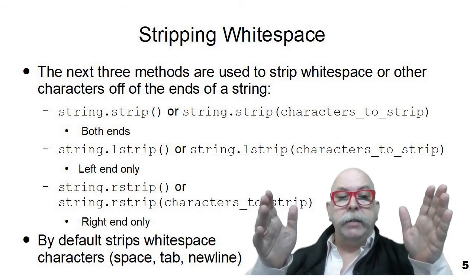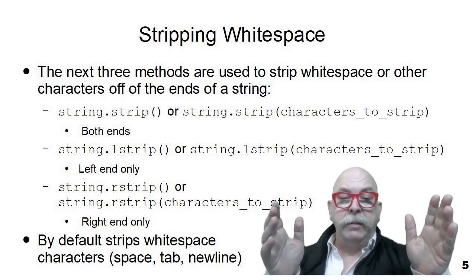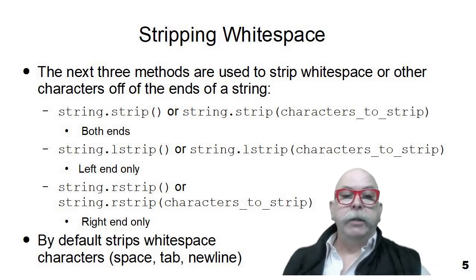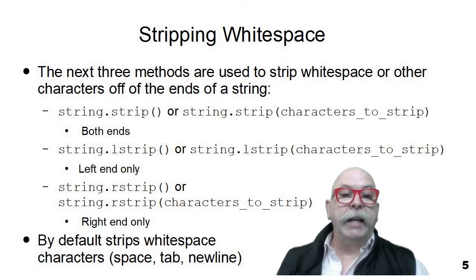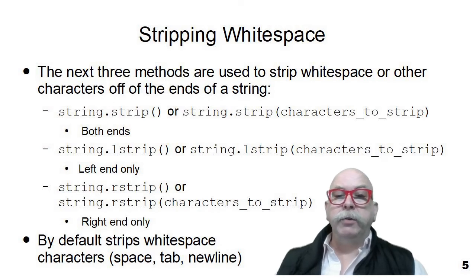Strip strips the whitespace off of both ends of a string. Lstrip strips the whitespace off of the left end of a string, and rstrip returns the string with the whitespace on the right end removed. You can optionally include a string containing characters to strip if you want to strip something besides the default whitespace, but most of the time you'll be using strip, lstrip, and rstrip just to strip whitespace from the string.